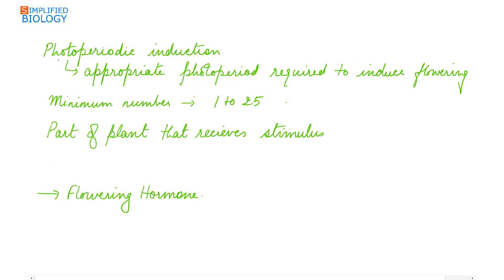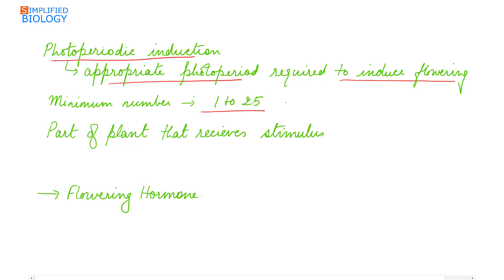Photoperiodic induction is the appropriate photoperiod required to induce flowering. The minimum number of appropriate photoperiods required is 1 to 25. The part of the plant that receives the stimulus is the leaves. A plant having a single leaf, when kept under the appropriate photoperiod, can cause flowering.